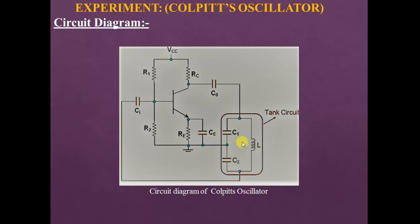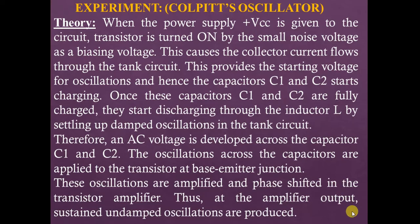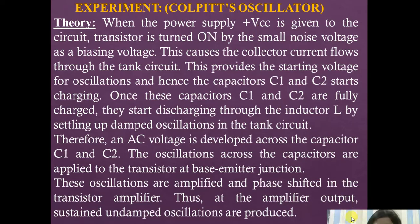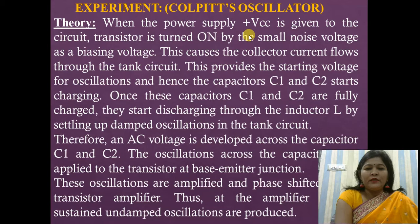The frequency of oscillations is determined by the values of L and C in the tank circuit. When the power supply plus VCC is given to the circuit, the transistor is turned on. Applying the power supply plus VCC causes the transistor to be turned on by a small noise voltage acting as a biasing voltage.